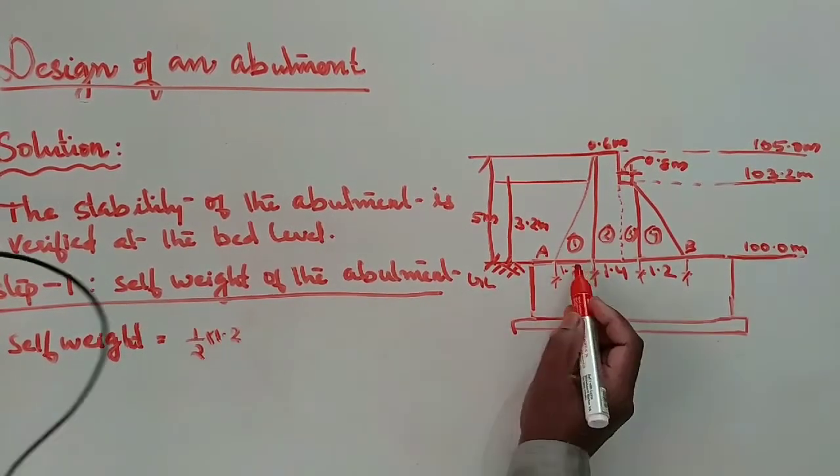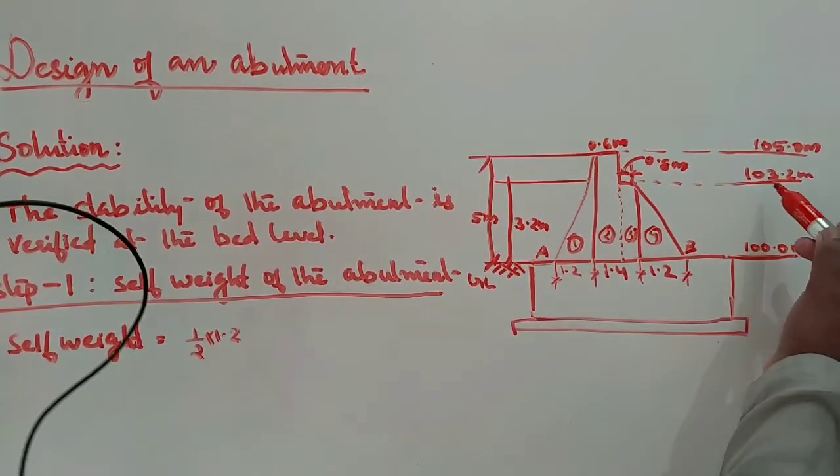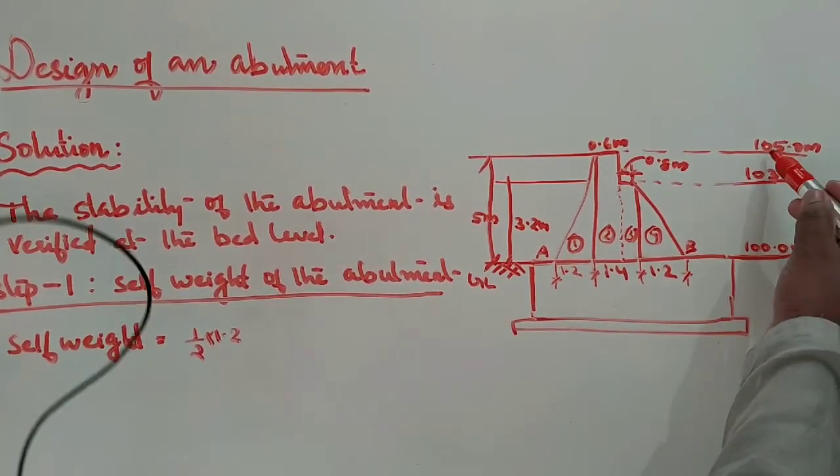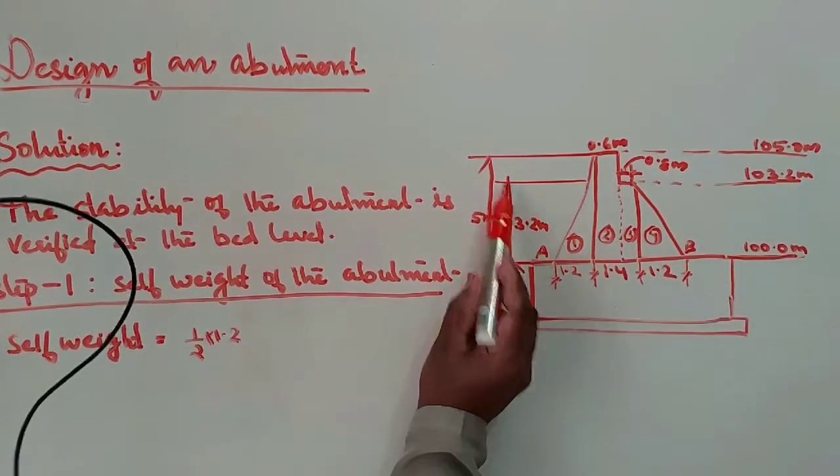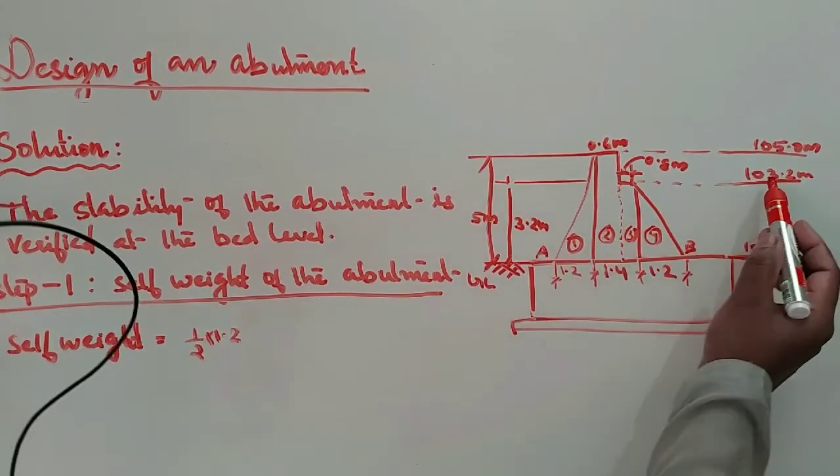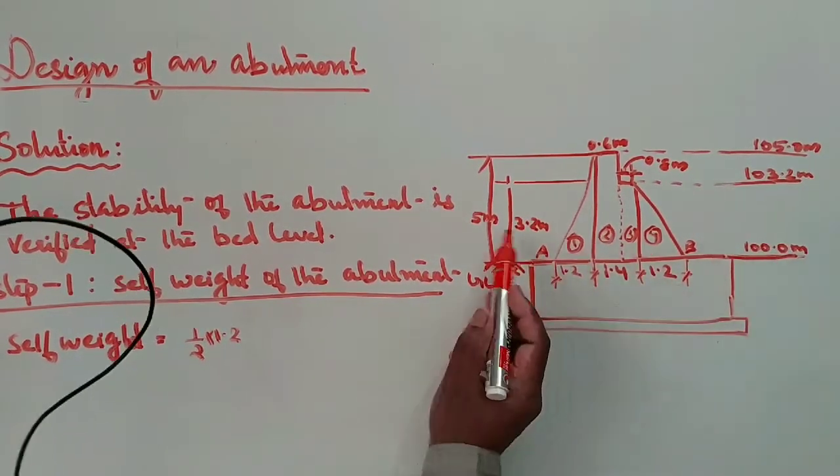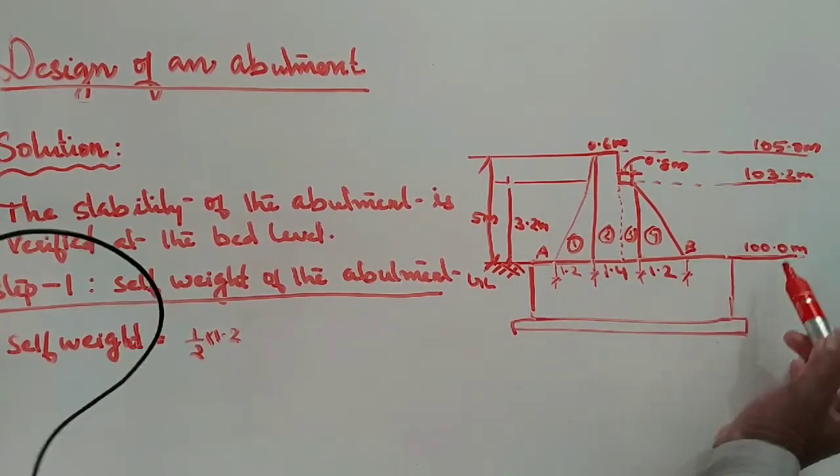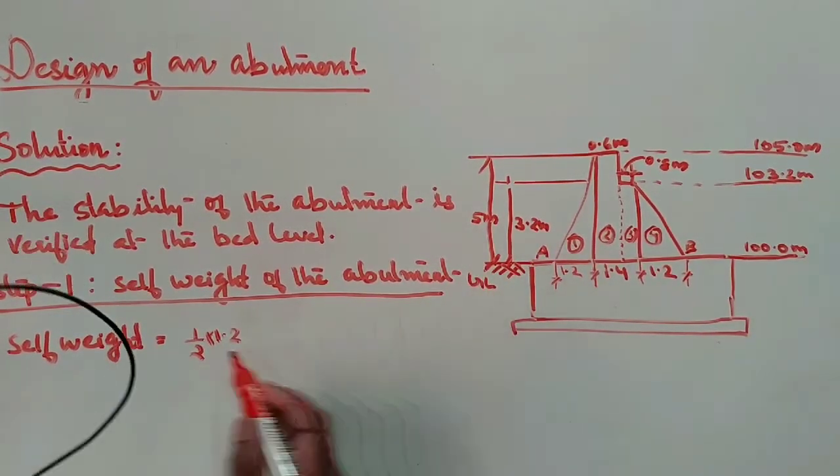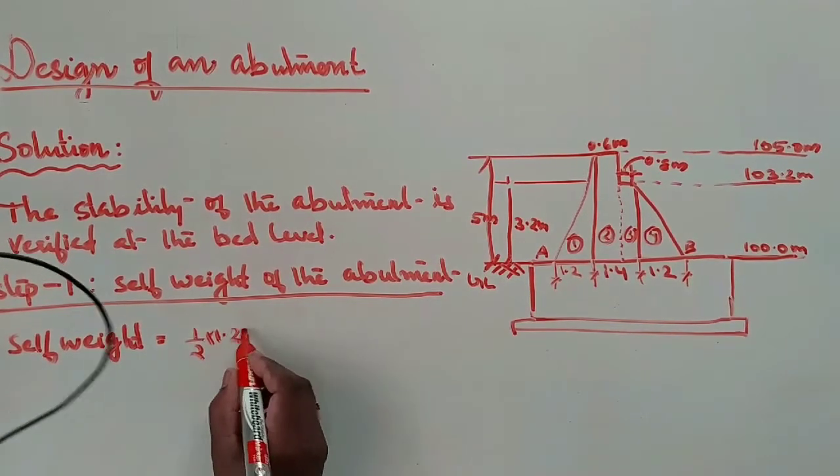First triangular portion: consider the area into its unit weight. Half into width 1.2 into its height - we don't know the height but we know the RL 103.2, above it is 105. 103.2 minus 100 is 3.2 meter. Then 105.0 minus 100 is 5 meter. Half into 1.2 into 5.